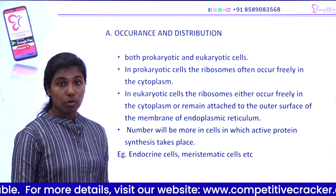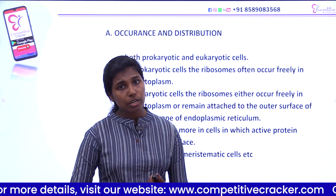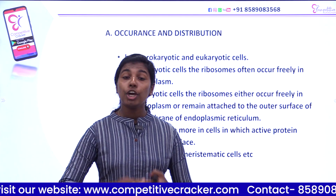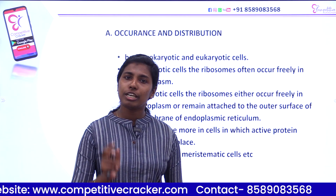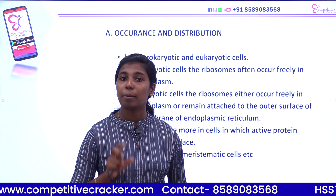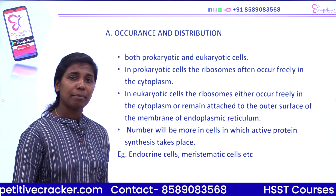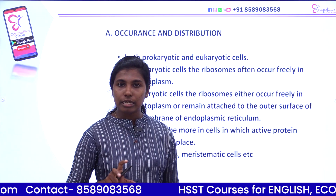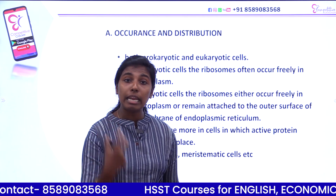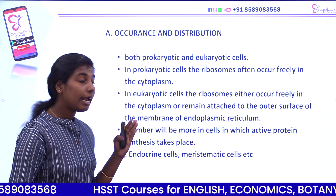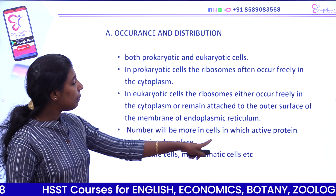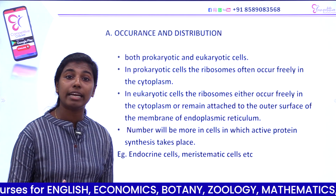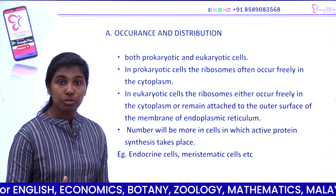Next is occurrence and distribution. Ribosomes are found in both prokaryotes and eukaryotes because they are non-membrane bounded. They occur in plant cells, animal cells, eukaryotic cells, and in organelles like chloroplasts. The function of ribosomes is protein synthesis — they are the site of protein synthesis in the cell. The number of ribosomes is greater in cells where active protein synthesis takes place, for example endocrine glands, which produce protein hormones.